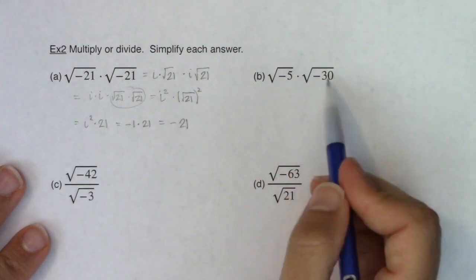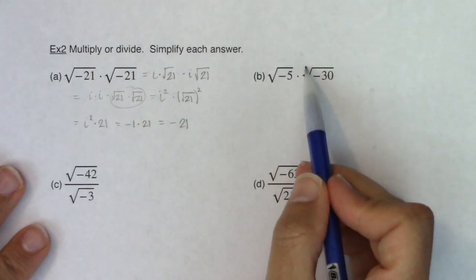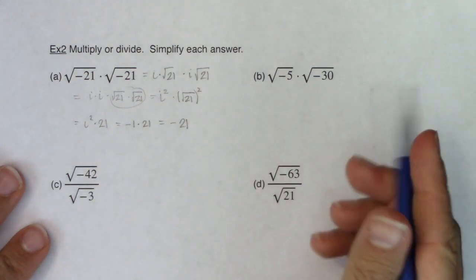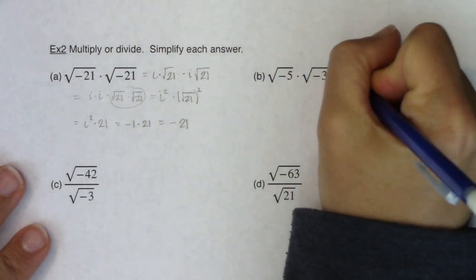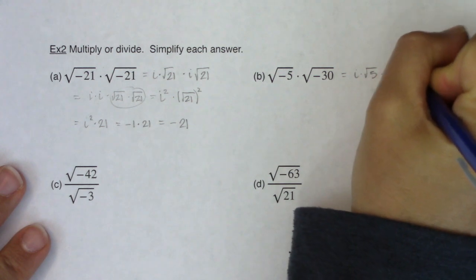So let's try that over here. For part B I see even index negative radicand, even index negative radicand. I got to take the i's out first. So I'm going to have i times the square root of 5 and then i times the square root of 30.